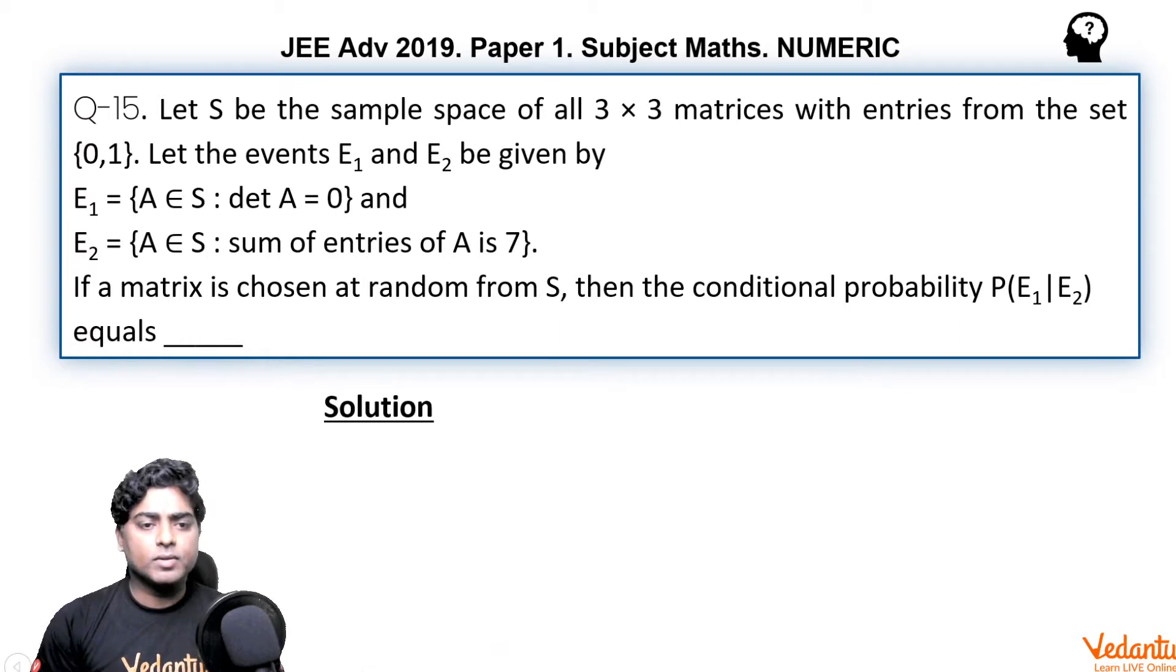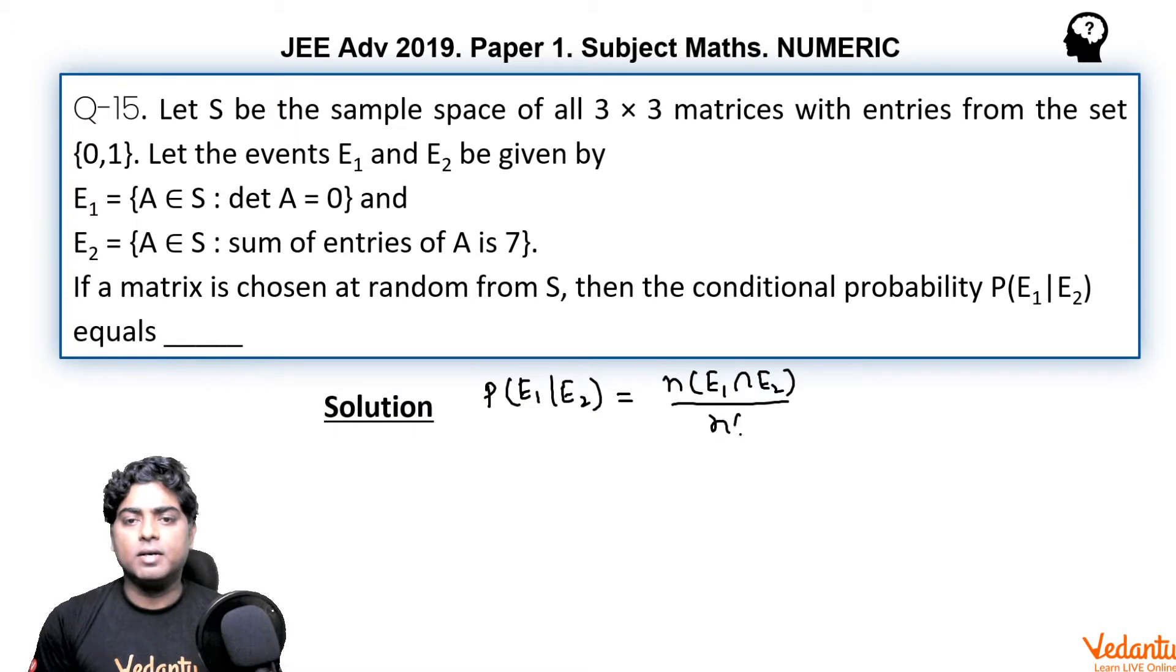P(E1|E2), the conditional probability what we have to find, I can write N(E1 ∩ E2) divided by N(E2). Here we need to find N(E2) and N(E1 ∩ E2).